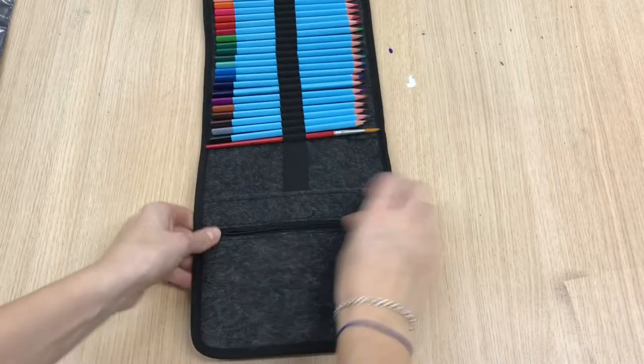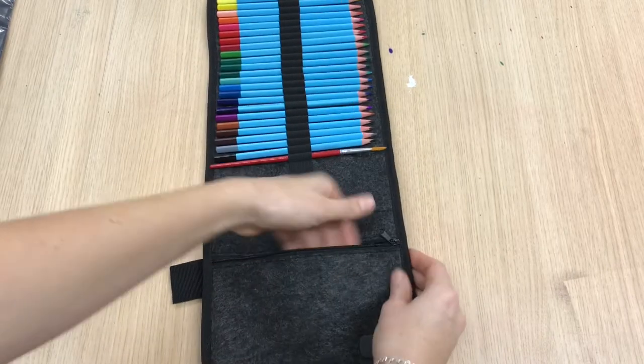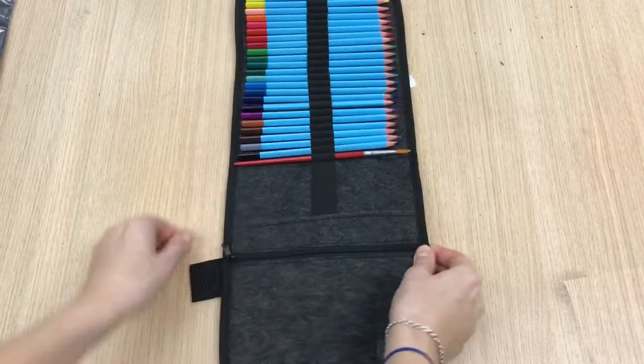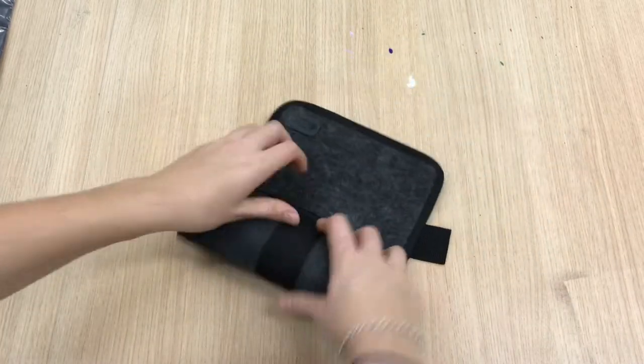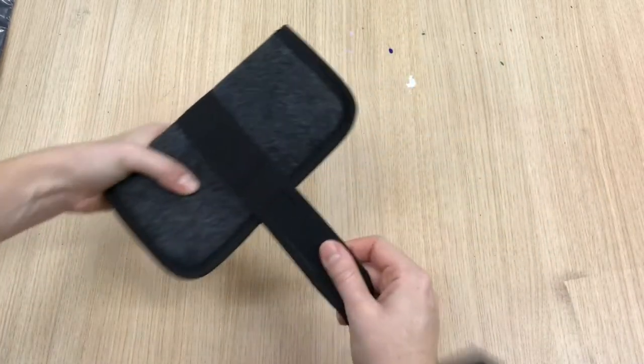They come inside a handy soft felt wrap. Inside there is an inner storage pocket, really handy to keep your rubbers, your pencil sharpeners, some tissue, and anything else you may need.